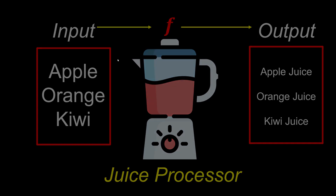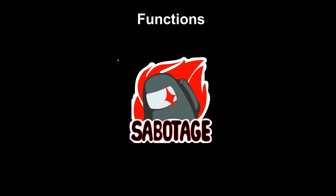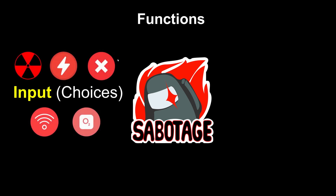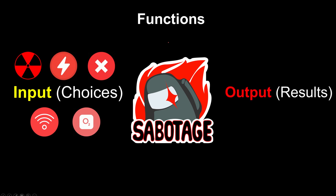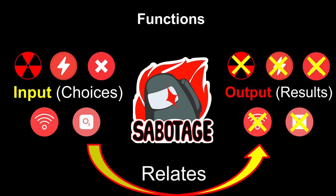So those fruits are what we call the input. If you pick an apple and put it into the juice processor, this function is going to process it and give us apple juice as the output. A function tells us what the output or result is based on the input or action that you take. If you've ever played Among Us, as an imposter you have two functions: sabotage and kill. Let's look more at sabotage — imagine sabotage acts like a function, where you have a bunch of choices to choose from, such as sabotaging the nuclear reactor, electricity, or communications.